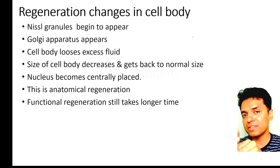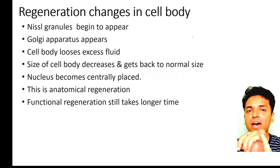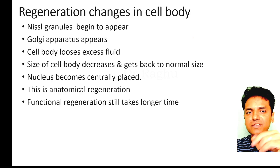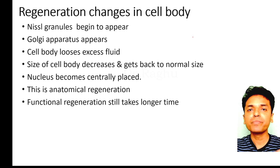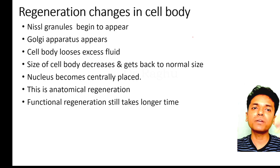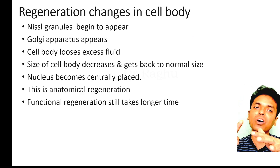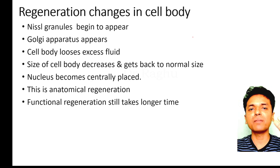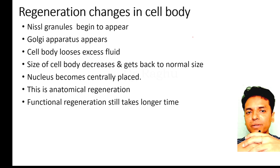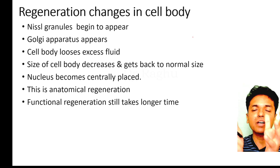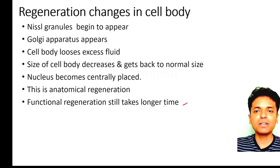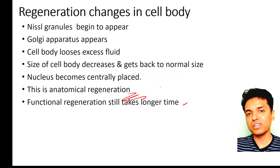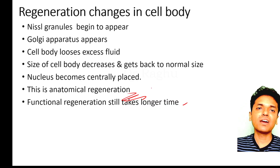For regenerative changes in the cell body: the Nissl granules, which had completely disintegrated (chromatolysis), begin to reappear. The Golgi apparatus reappears. The cell body, which had swollen with excess fluid, begins to lose that fluid, and the cell size returns to normal. The nucleus, which was pushed to the periphery, returns to its original central position. All these changes constitute anatomical regeneration. Functional regeneration takes still longer. This concludes the topic of nerve injury.